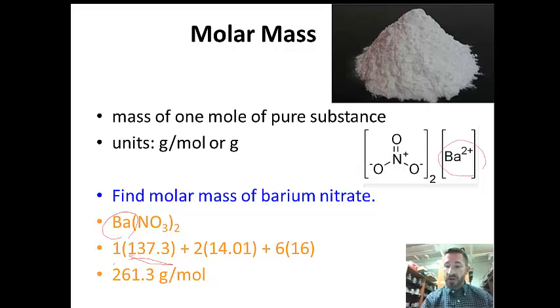One barium has a mass of 137.3. Then there's two nitrogens because there's two nitrates, so two times 14.01. Then there's two nitrates, which means two times three, which is six oxygens times 16. This gives us a total molar mass of 261.3 grams.